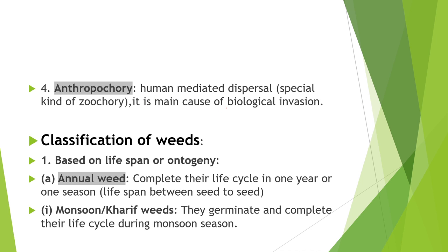Next topic is classification of weeds. Weeds can be classified on many bases. First is on the basis of lifespan or ontogeny — weeds are classified into annual, perennial, and biennial. Annual weeds complete their life cycle in one year. Biennial weeds require two years and two seasons to complete their lifespan. Perennial weeds require more than two years. Further, annual weeds are classified into monsoon, winter, summer, and ephemeral weeds. Weeds that germinate and complete their life cycle during the monsoon season are known as monsoon or kharif weeds.